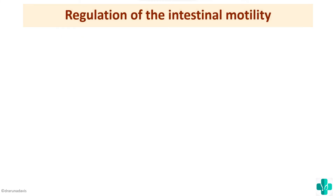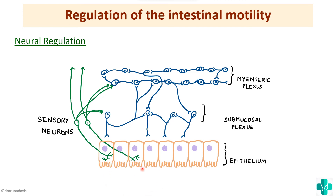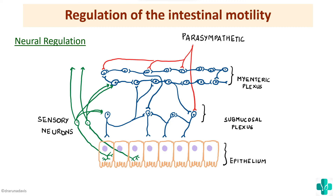Next is the regulation of intestinal motility. There are two types: neural regulation and hormonal regulation. In all the motility discussed, it is the enteric nervous system — including the submucosal and myenteric plexus — that plays a very important role. The enteric nervous system is also influenced by the extrinsic autonomic nervous system. The parasympathetic system synapses onto the myenteric and submucosal plexuses to regulate motility, while the sympathetic system decreases intestinal motility, preparing the body for the fight-or-flight response.